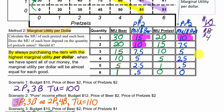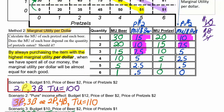What should we buy next? Is it the third beer at 7.5 utils per dollar or the second pretzel? They're equal - let's buy both if we can afford them. They're $2 each and we have $4 left, so we buy both and now we're out of money. Let's see: is this the same as we predicted with the budget line method? Two pretzels and three beers - yes! And a total utility of 100.